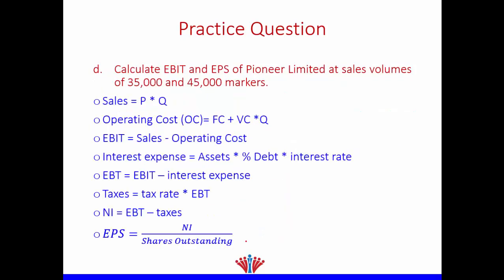To calculate EBIT and EPS at 35,000 and 45,000 units, we use these formulas: Sales = Price × Quantity; Operating Cost = Fixed Cost + (Variable Cost per Unit × Quantity); EBIT = Sales − Operating Cost; Interest Expense = Debt Ratio × Assets × Interest Rate; EBT = EBIT − Interest; Taxes = Tax Rate × EBT; Net Income = EBT − Taxes; EPS = Net Income ÷ Shares Outstanding.